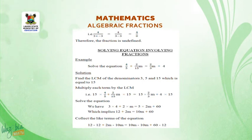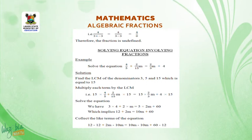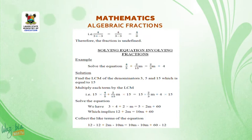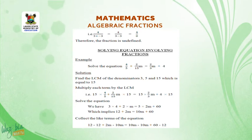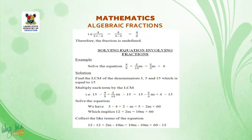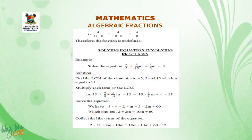Multiply each term by the LCM: 15 times 4 all over 5, plus 15 times 2 all over 15m, equals 15 times 2 all over 3m, plus 4 times 15. Solving the equation, we have 3 times 4 plus 2 times m, which equals 5 times 2m plus 60.